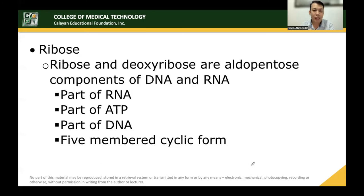Ribose and deoxyribose are both aldopentoses that are components of DNA and RNA. Ribose is a part of RNA and ATP, while deoxyribose is part of DNA (deoxyribonucleic acid). When created in a cyclic form, ribose forms a five-membered ring.